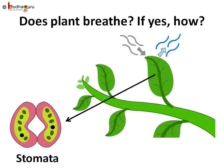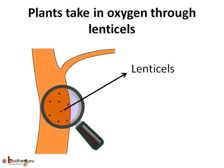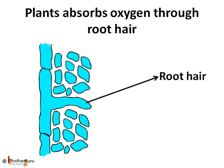What about plants? It is a living thing. Does it breathe too? We never see it breathing. Yes, a plant also needs oxygen for respiration. It takes in oxygen through stomata in leaves. In the old stems, there are small pores called lenticels which are also used for the exchange of gases. Even the roots take in oxygen from the air spaces between soil particles using the hair on the roots.